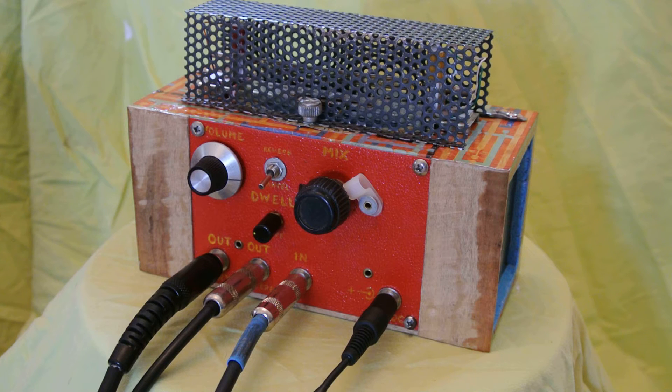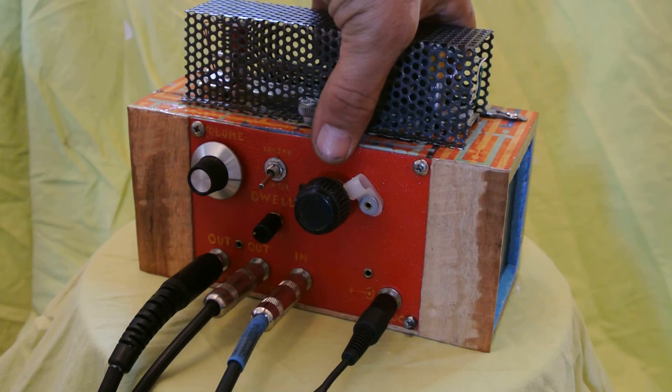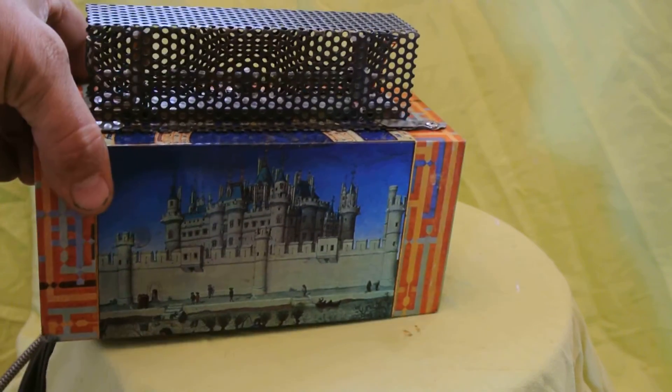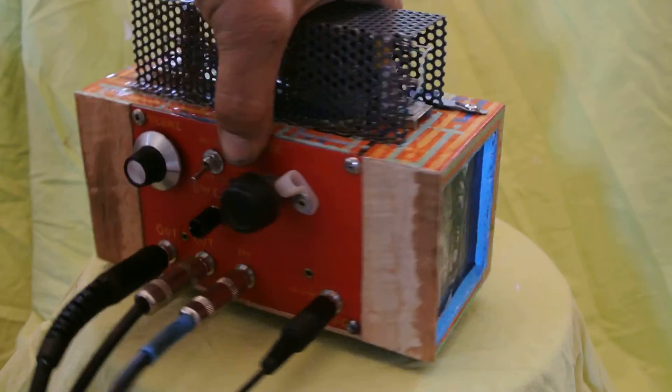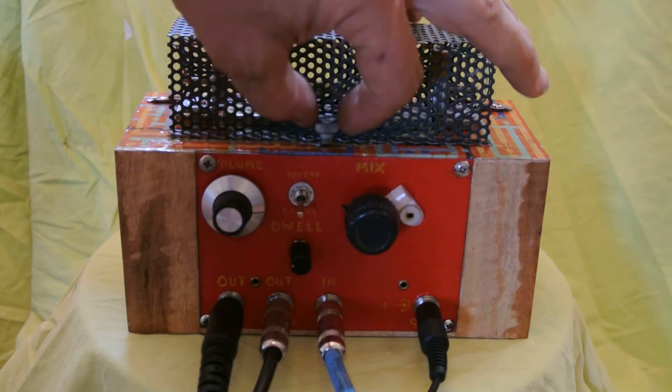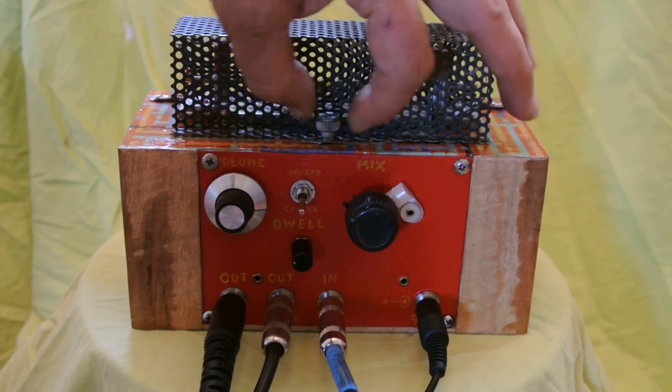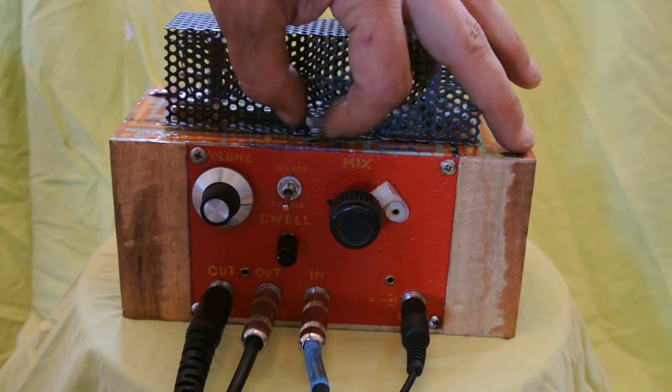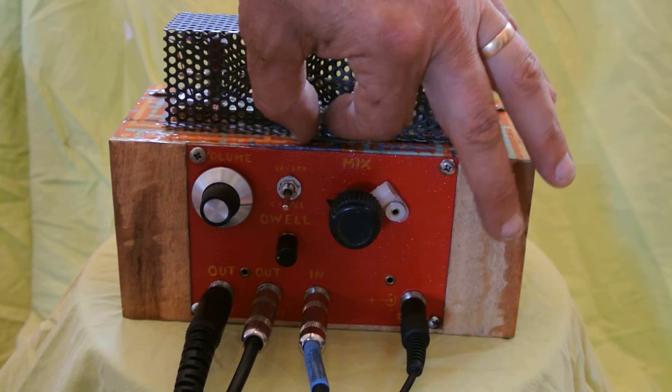We have here the Springus Reverberatum. It is a spring reverb in a sweet little case here. The springs underneath this cage, which we can remove with this thumb screw, which is very tight right now. There it goes.